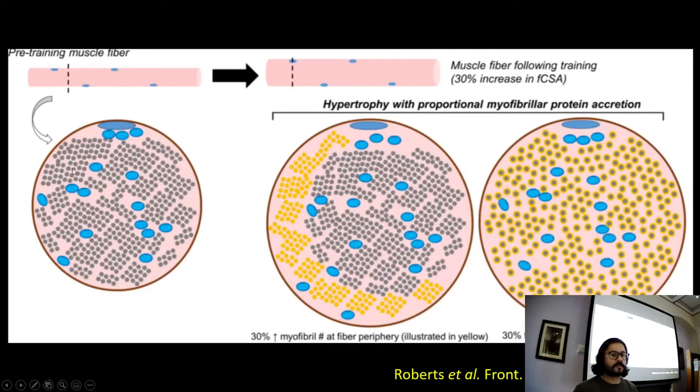So this is a pre-training muscle fiber. And what we can see here is the grey dots represent the myofibrils. So they were like the red little filaments I was doing in my drawing. So you've got the grey myofibrils, grey areas.